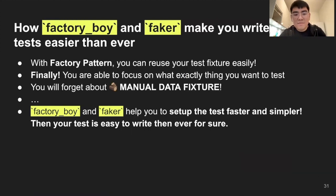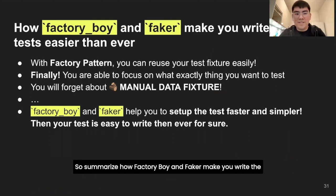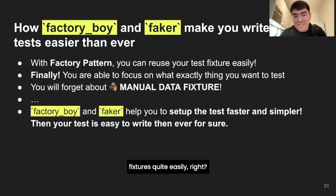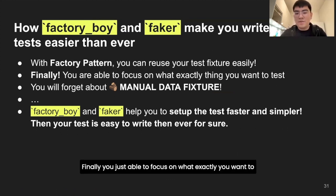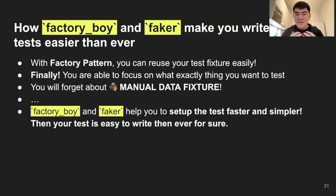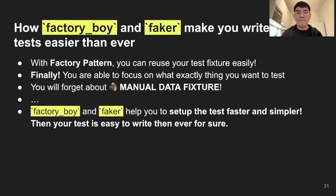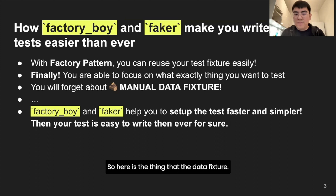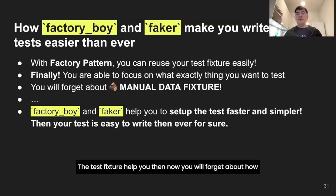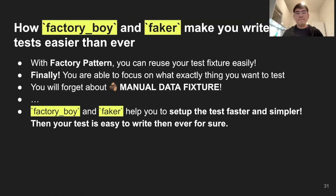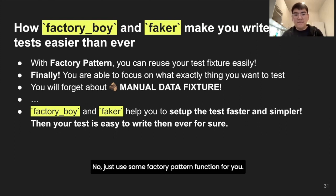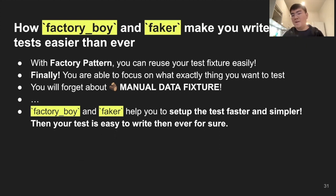To summarize how Factory Boy and Faker make writing tests easier: with the factory pattern you can reuse your test fixtures quite easily, and you're able to focus on exactly what you want to test. If I just want to test the primary address, I don't care about other customer properties. Factory Boy helps make object creation simpler. Now you can forget about manually creating test fixtures - just use factory pattern functions. When setup is fast and simple, it's much easier to write tests.